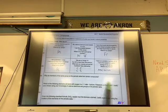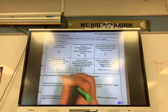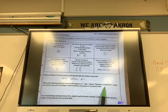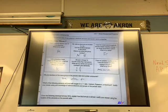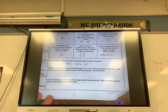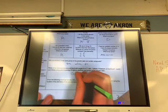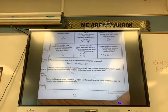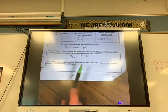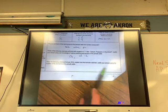Why do members of the same group on the periodic table form similar compounds? Same valence electrons. Which of the following elements will bond in a one-to-one ratio with oxygen? Calcium, potassium, or aluminum? No, which two of these will bond together in a one-to-one ratio? Bond with oxygen. So which ones? Calcium. Anything else? No, because calcium has a plus two charge. Oxygen has a minus two. That's a plus two, a minus two. That's a perfect match. Given the following formula, SrCl2. Explain how this formula is derived. Justify your answer using the location of elements on the periodic table.